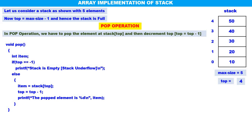Let us see how pop happens: pop 50 — item gets 50, top becomes 3. Pop 30 — item gets 30, top becomes 1. Pop 20 — item gets 20, top becomes 0. Pop 10 — item gets 10, top becomes minus one. When top equals minus one, the stack is empty.